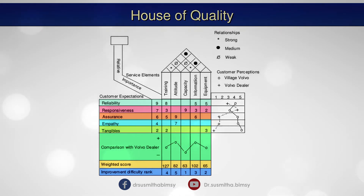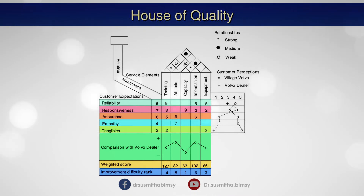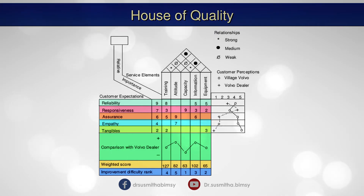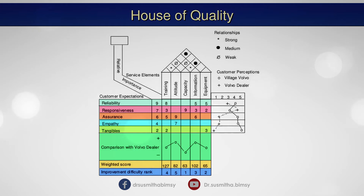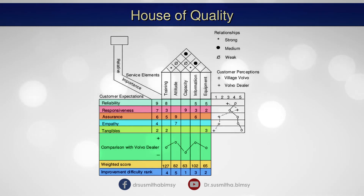Next is the association between expectations and service elements. In the body of the matrix are listed numbers which represent the strength of the relationship between each expectation and the related service element. These numbers reflect how various elements affect the company's ability to satisfy the particular customer expectation. A score of zero suggests no effect, whereas a score of nine suggests a very strong effect.